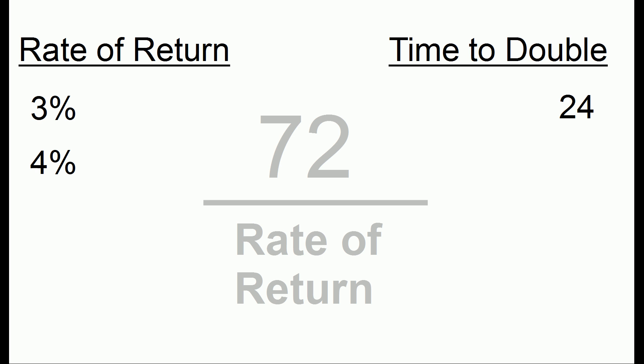If you have a rate of return of 4%, we can take 72 divided by 4, and that gives us 18 years. Other examples: with a rate of return of 6%, it'll take you 12 years. With 8%, it'll take you 9 years. And with 12%, it'll take you 6 years for your investment to double.